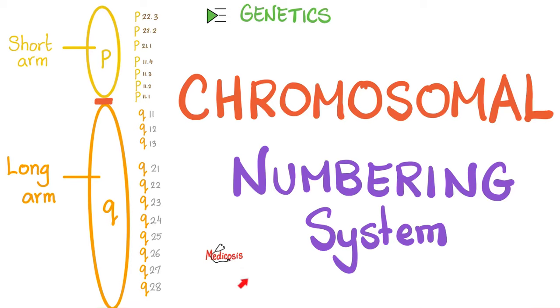What is going on, people? It's Medicosis Perfectioneros, where medicine makes perfect sense. Let's continue our genetics playlist. Today, we'll talk about chromosomal numbering system, or the nomenclature.